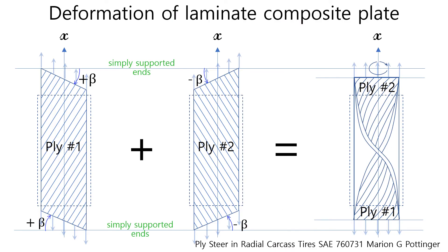Based on the knowledge we have learned until now, for the simply supported ends, bottom and top of laminated composite plate will rotate further and further way opposite to each other in accordance with the tension force increasing. And we end up with the plate twisted 180 degrees shown in the picture. The detailed contents are available in the essay paper number 760731, Plysteer in radial carcass tires written by Pottinger.